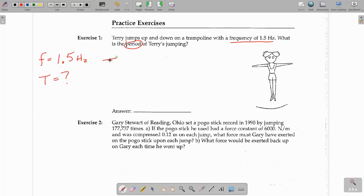We know that period and frequency are reciprocals, so this will just be 1 divided by frequency, which is 1 divided by 1.5 Hz. And that is equal to 0.67 seconds. Moving on.